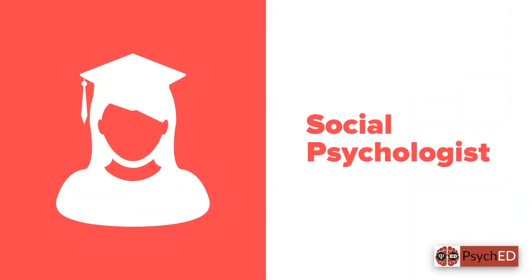How to become a social psychologist? Well, the usual route is preferably a bachelor's degree in psychology, and on top of that a master's degree and PhD in social psychology.